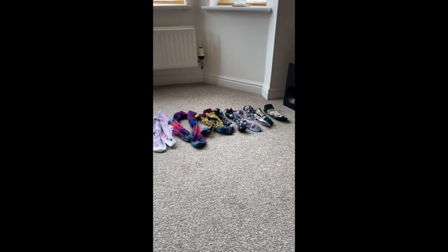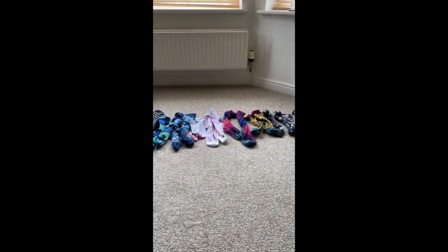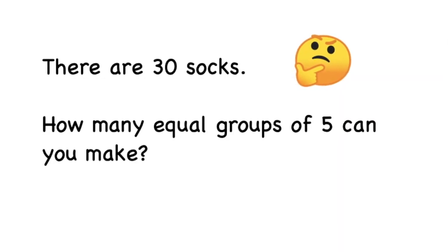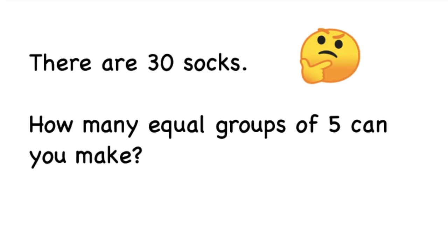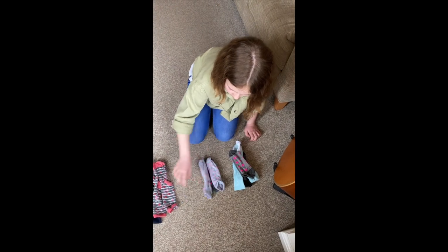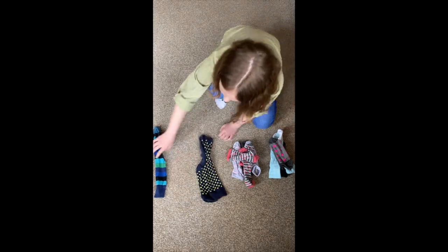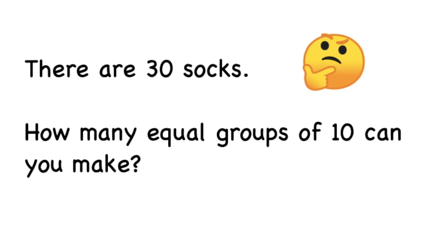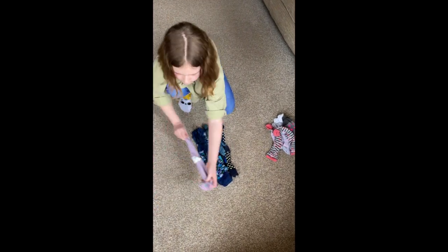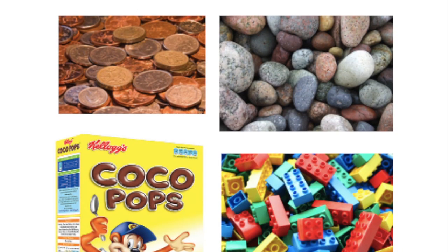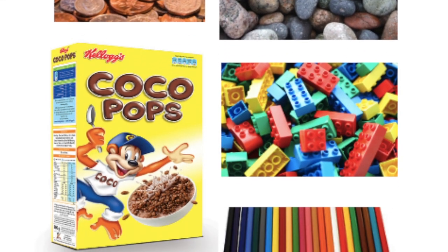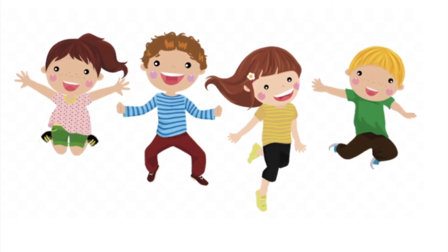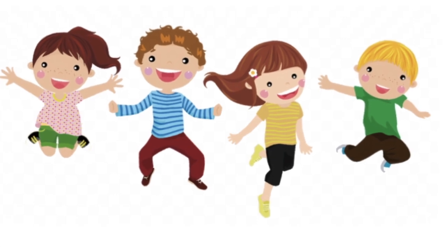So we've got our 30 socks back in a line. Now I'm not going to give you the answers for the next 2 questions. I want you to have a go yourselves at home. If I've got 30 socks, how many equal groups of 5 can I make? Or how many equal groups of 10 can I make? You could use anything in your house from 30 Coco Pops to 30 pieces of Lego. Have a go working out while you count forwards and backwards in 2s, 5s and 10s too.